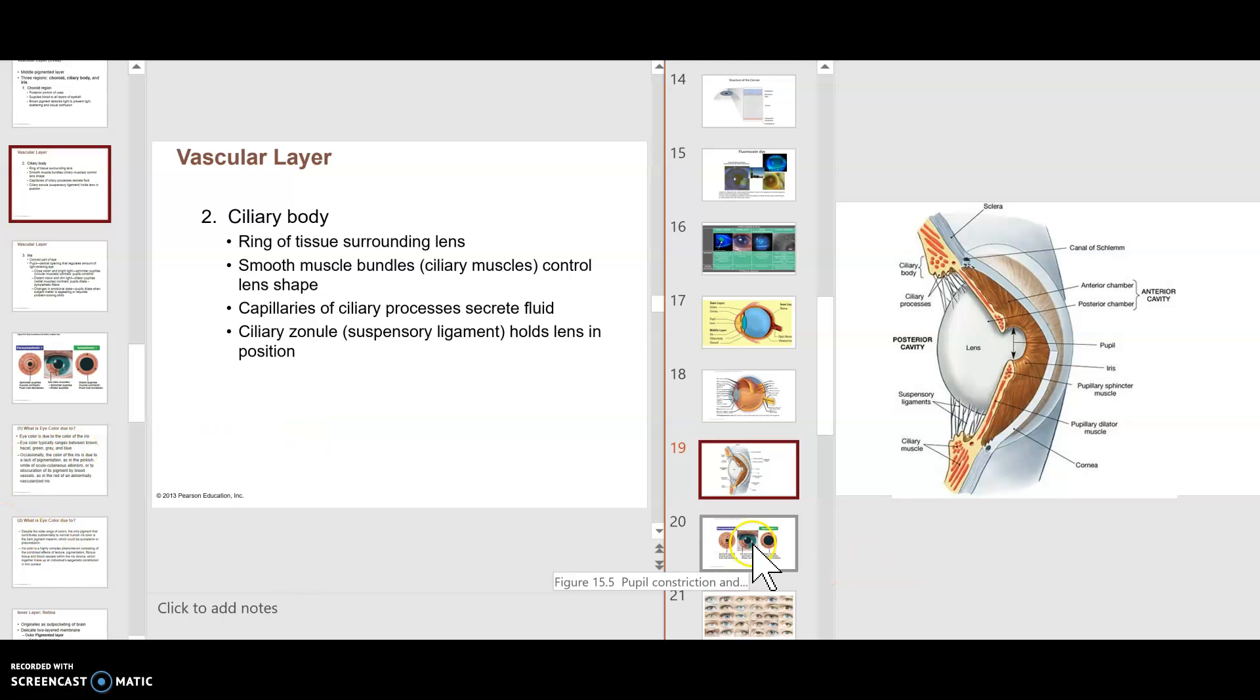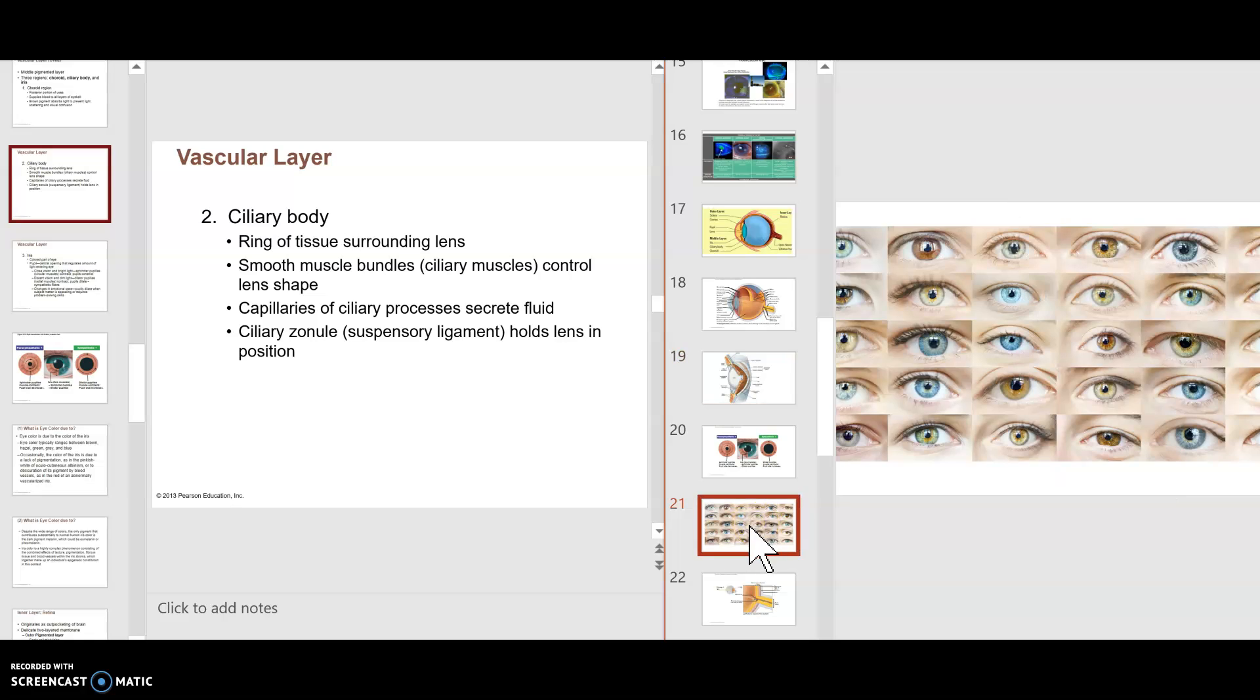Here again is a picture of the various eye colors that you can see here. And again, it's all due to many variations that you have, but all due to melanin. So there's no blue or green color. Everything has to do with variations in how the melanin appears. So that's what you're looking at when it comes to the particular eye color.